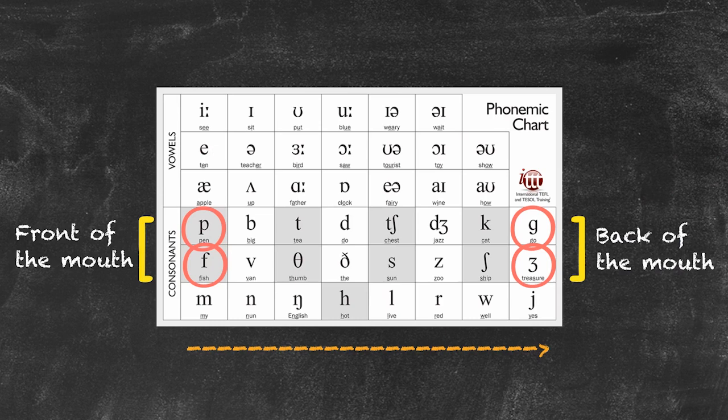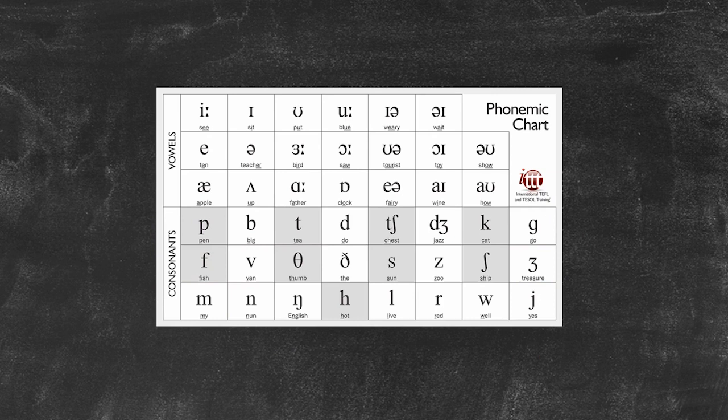We can use the examples of G. The sound G is produced further back in our mouth than P. The next thing we'll notice about our chart is that some of our symbols are shaded.